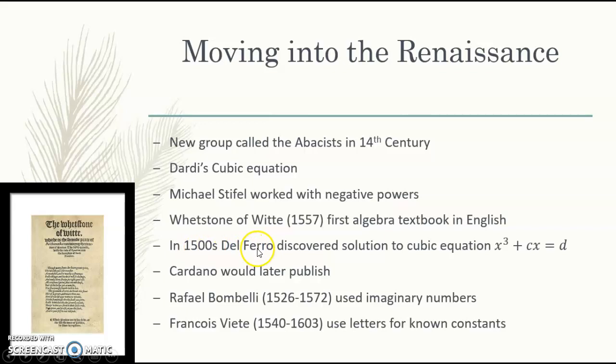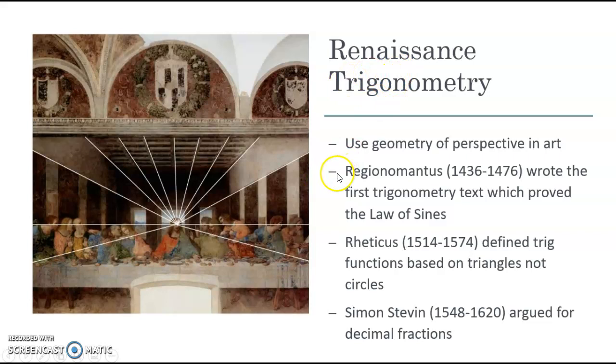In the 1500s, Del Ferro discovered a solution to the cubic equation. We also have Cardano, who later published his work, as well as Raphael Bombelli, who used imaginary numbers, and Viète, who used letters for known constants. Looking back at Dardy's cubic equation and diving into that a little more, he was able to solve this by completing the cube.